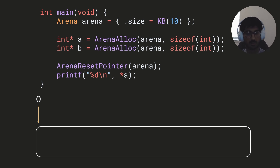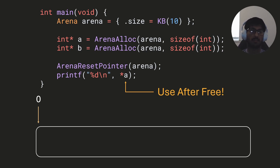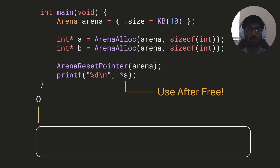A use-after-free bug in an arena looks like printing out variable 'a' after resetting the arena. Normally, when you free memory allocated with malloc, it's undefined behavior to access that variable again. In arenas it's similar — after reset_pointer, technically we should not access 'a' anymore, because whatever 'a' is pointing to might now be a float, a string, or anything else, causing crashes and unexpected behavior.